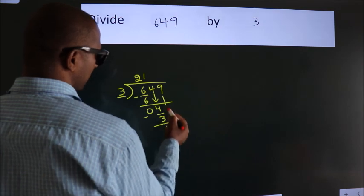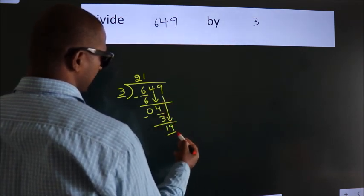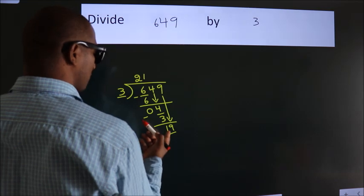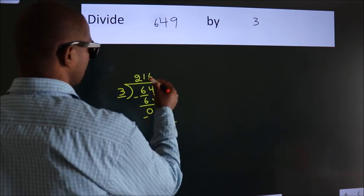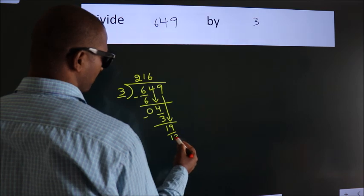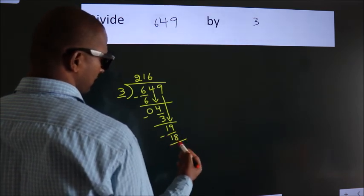After this, bring down the beside number. So 9 down. So 19. A number close to 19 in 3 table is 3 times 6, 18. Now we subtract. We get 1.